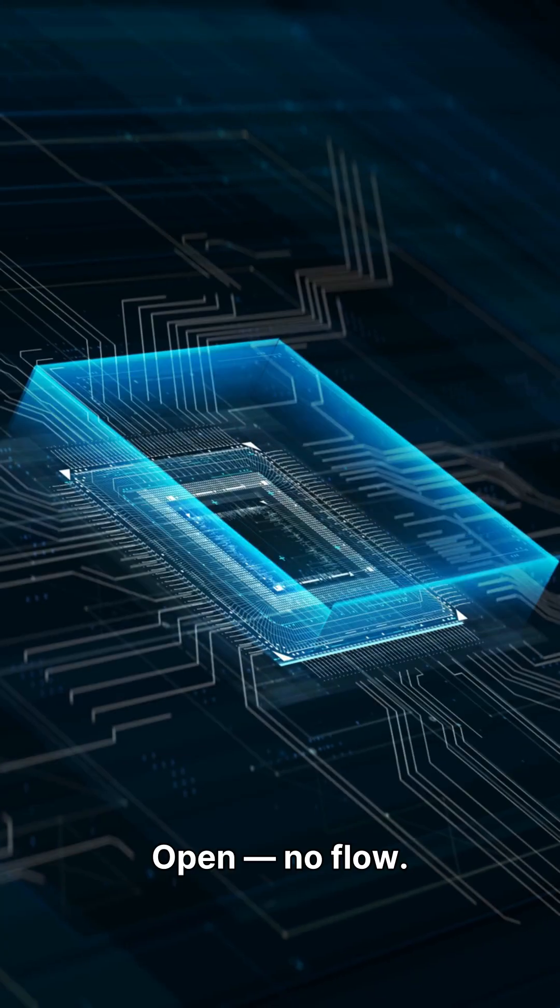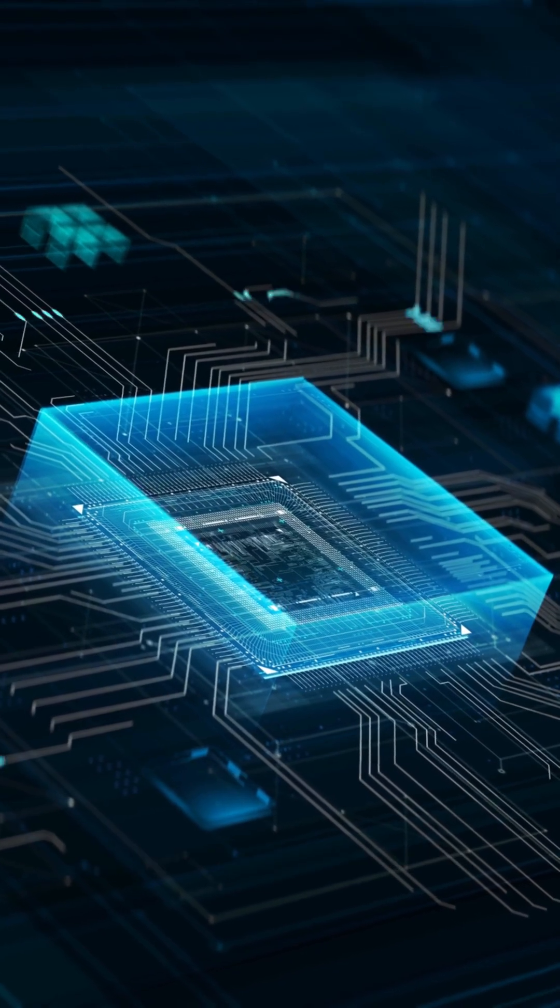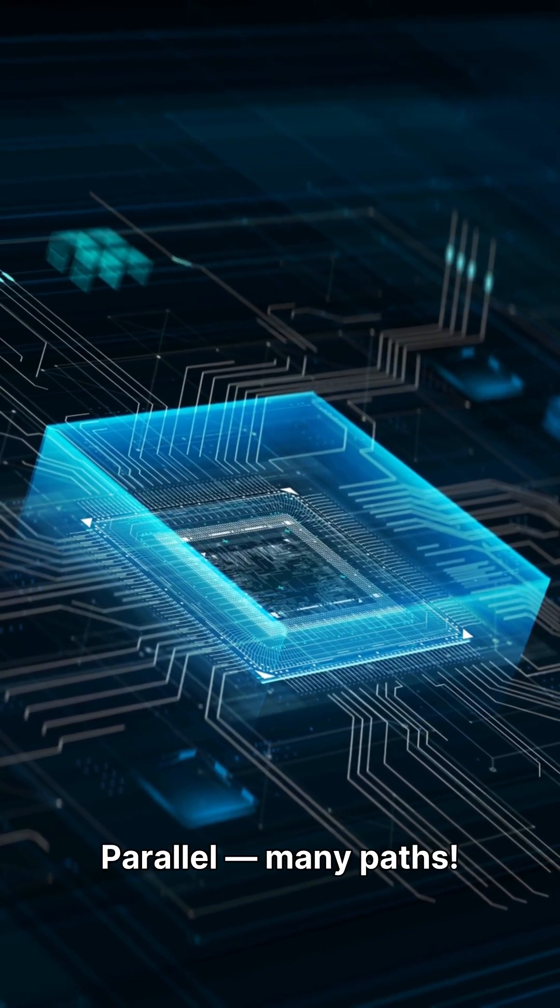So here's the summary. Open: no flow. Closed: complete flow. Short: dangerous flow. Series: one path. Parallel: many paths.